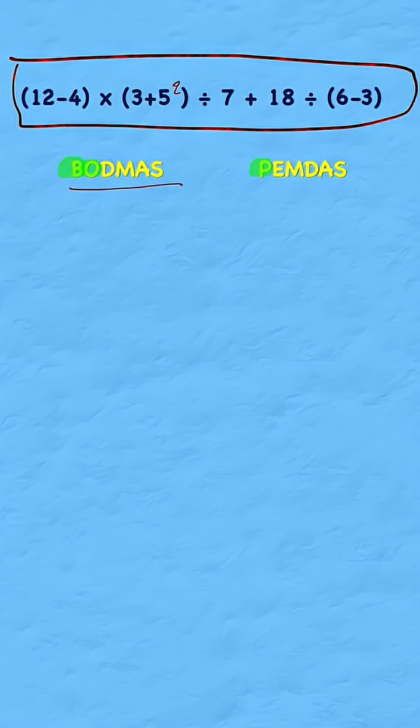Then we have O for order or E for exponent, and the order or exponent just refers to this little power of two, or sometimes we might have a square root.